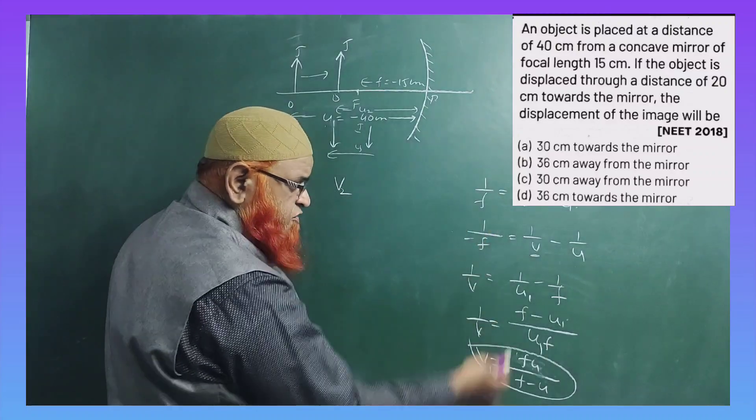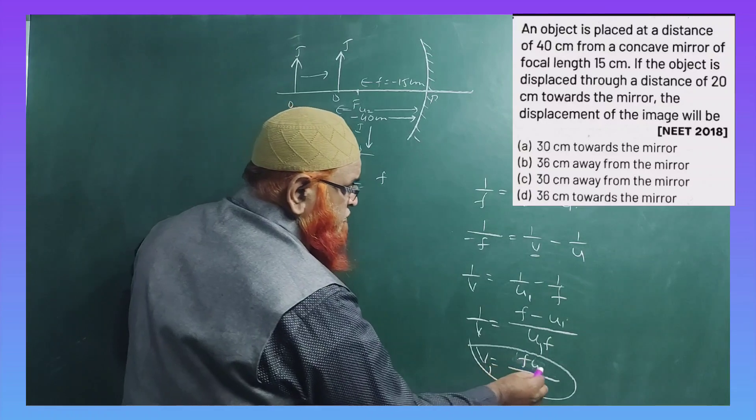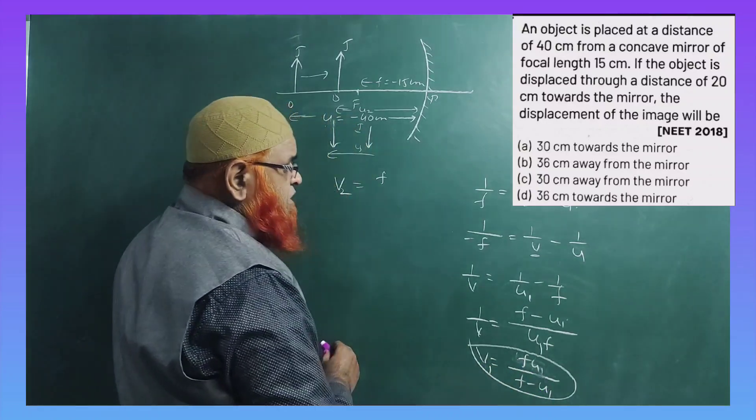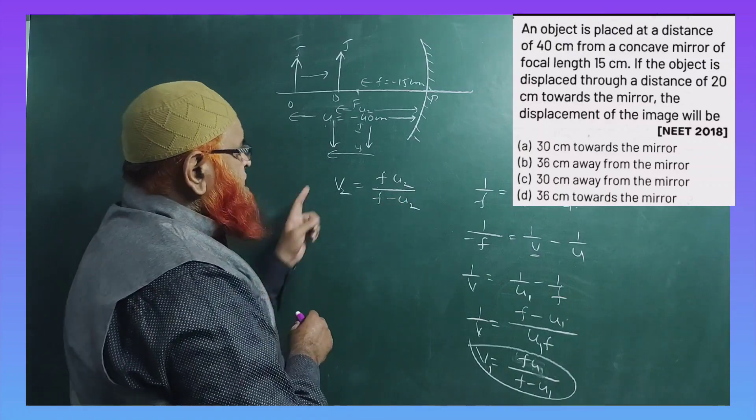So now we do similarly. If you derive for v2, you will get the formula as here f·u1/(f-u1), but here you will get f·u2/(f-u2).